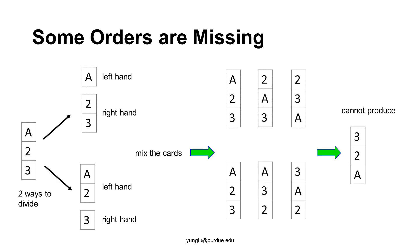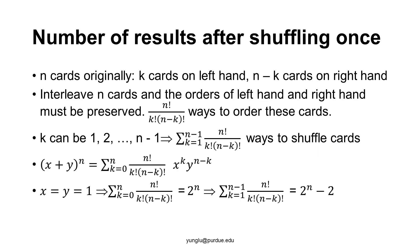Next we consider another way to divide the cards. The left hand has A and 2 in one group, and the right hand has only card 3. Card 3 may be below A and 2, between A and 2, or above A and 2. If we examine the produced orders, we notice that one possible order is missing — riffle shuffle cannot generate the order where 3 is above 2 and 2 is above A. As the number of cards increases, this problem becomes more serious.